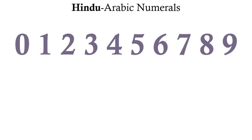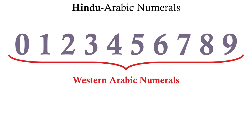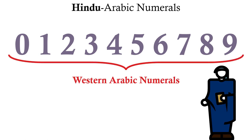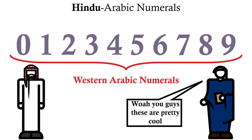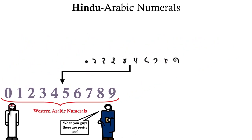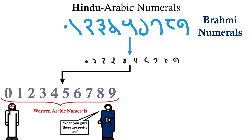You might have heard the name Hindu-Arabic numerals for these numbers. Hindu-Arabic. That's because although these Western Arabic numerals we're all familiar with came to Europe through Arabia, they themselves descended from numeral systems used in India, ultimately from the Brahmi numeral system.